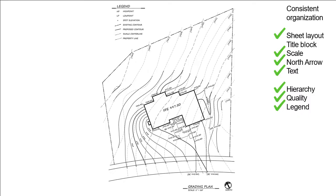So now you have a basic understanding of what we intend to mean when we say consistent organization. Sheet layout, title block, scale, north arrow text, line hierarchy, quality, and a clear legend. These are all things that you're going to need to include in this exercise.